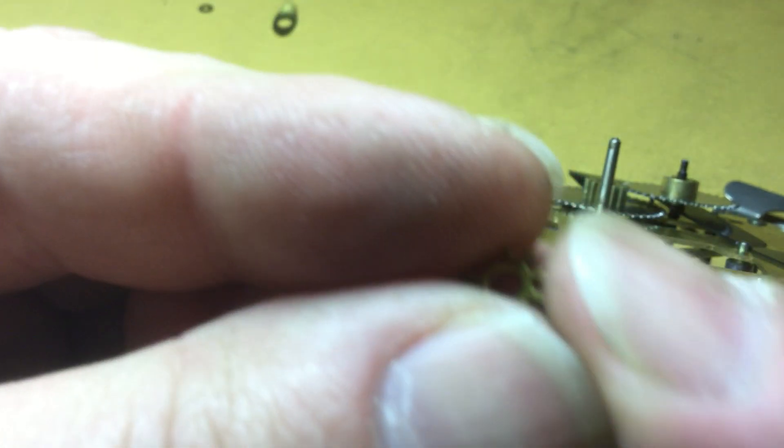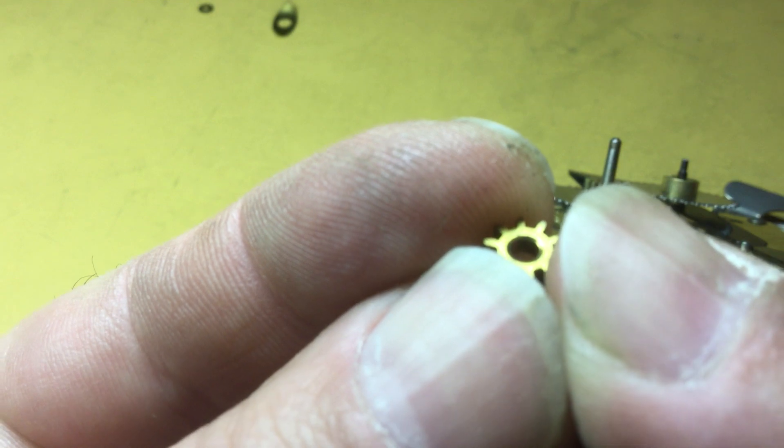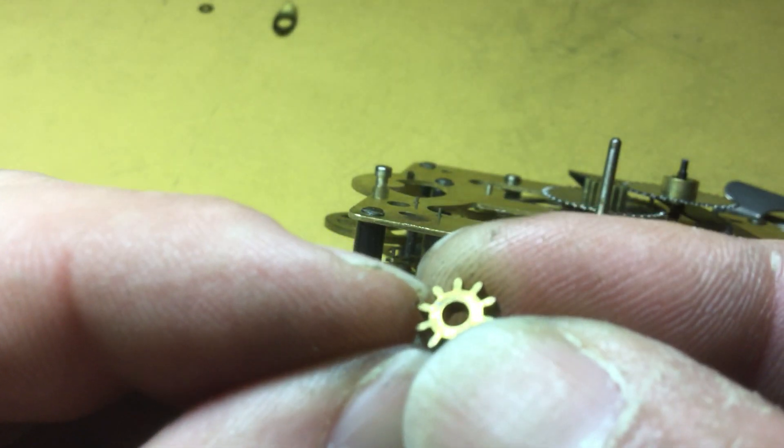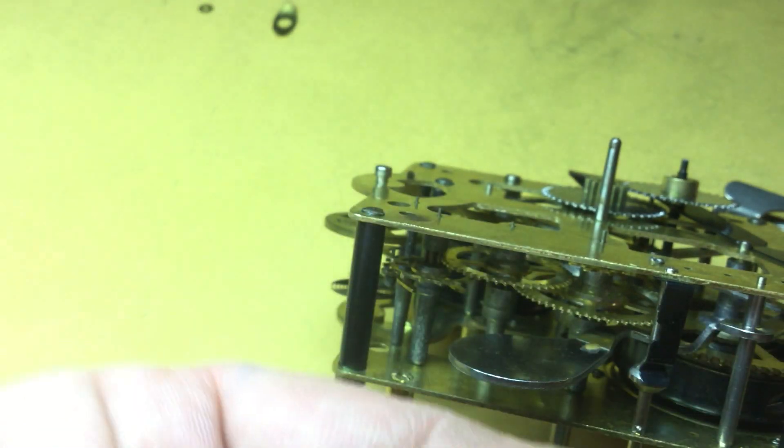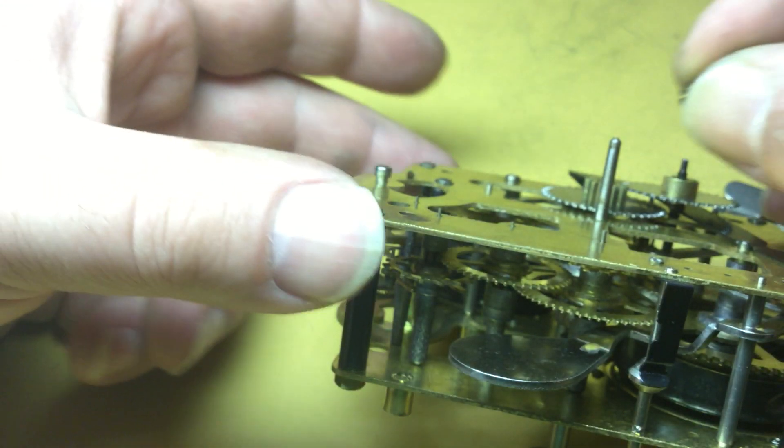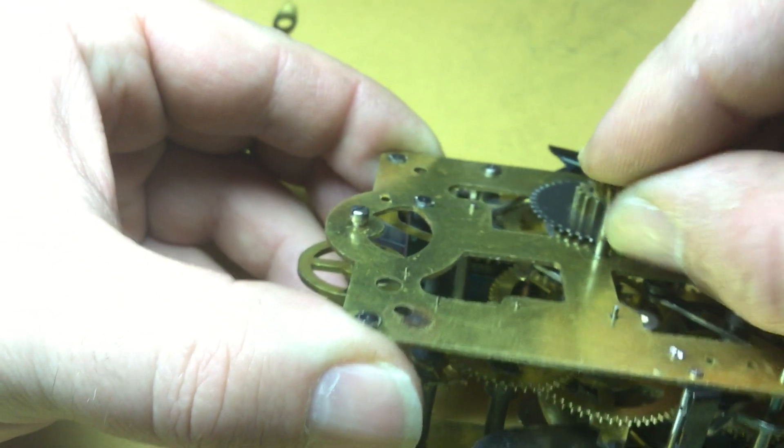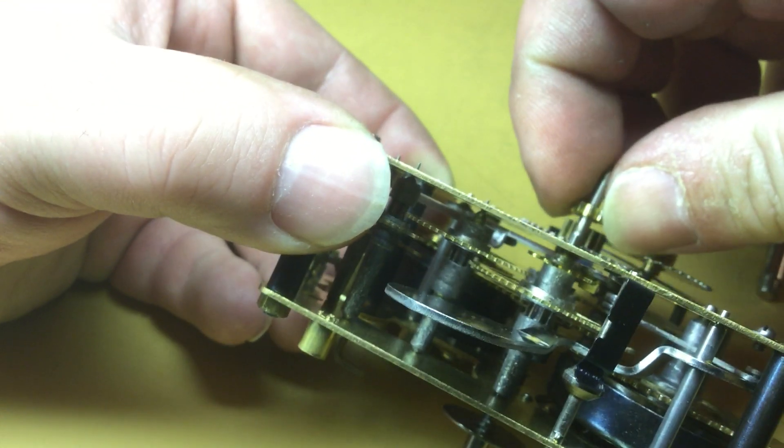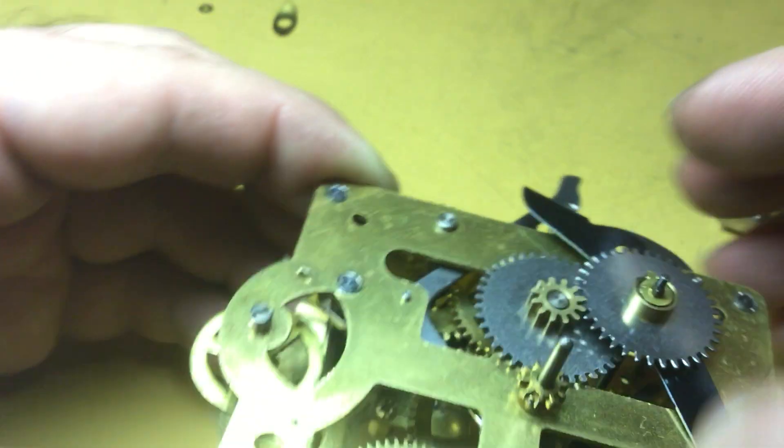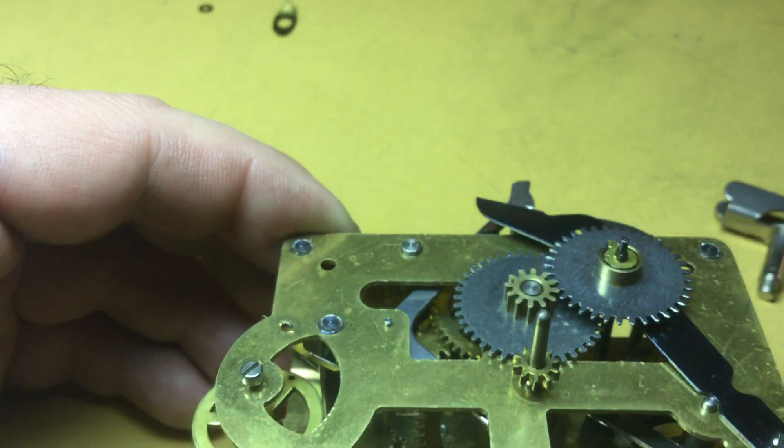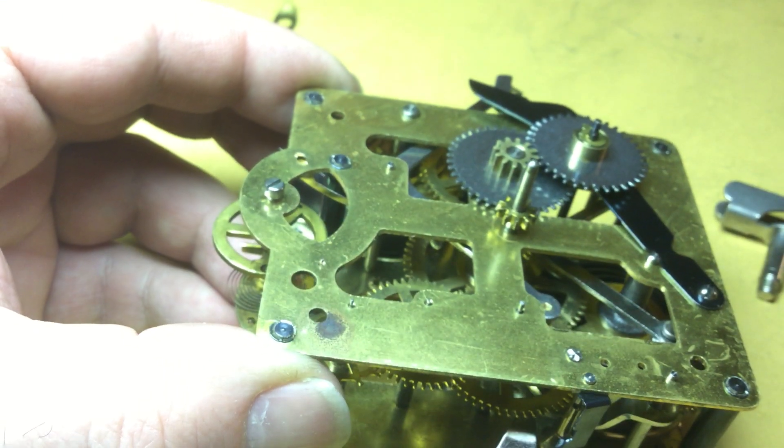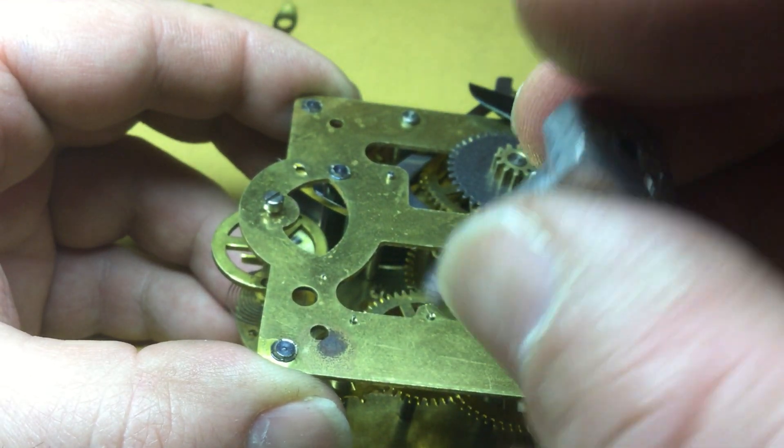Now the shuck pinion has a hole on one side that has a chamfer. And the hole on the other side is plain. The chamfer side faces the movement. Put it on there like that. It slips on there real nice because the shoulder of the wheel has a little tapered part down there where the shuck pinion goes.